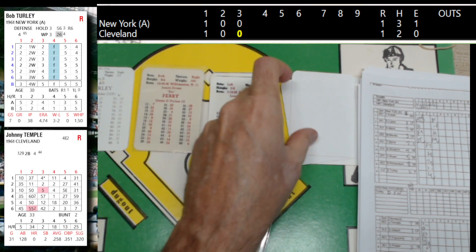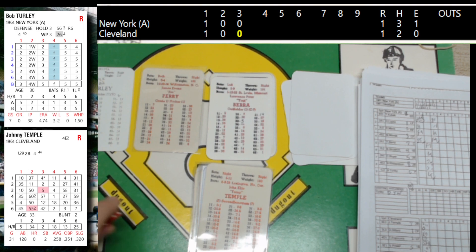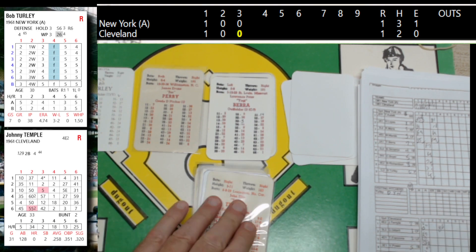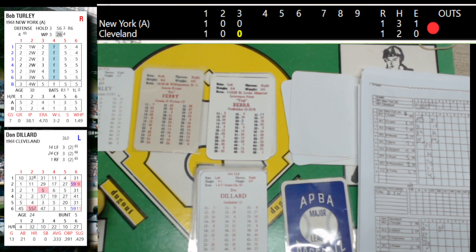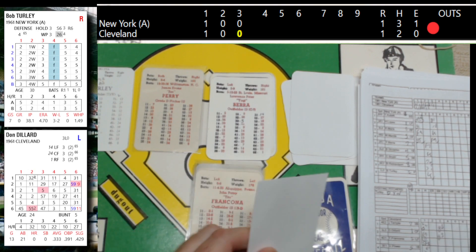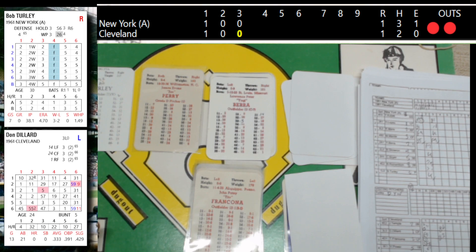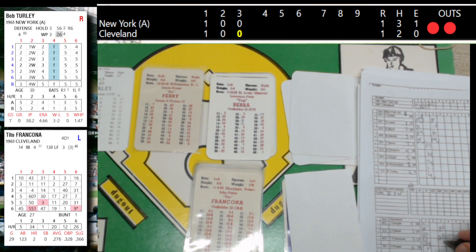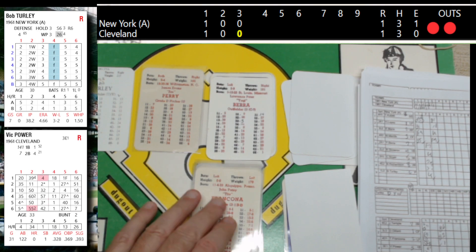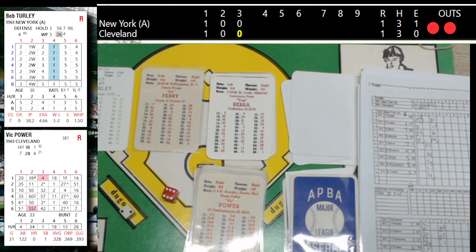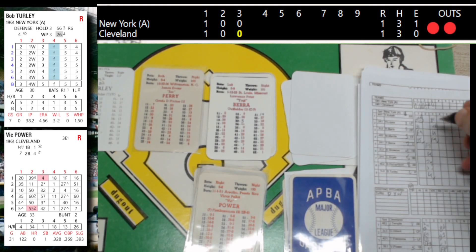Bottom of the third. Temple bounces to the shortstop, Kubik picks it up and throws him out, first out. Dillard bounces out to first baseman Scourin, steps on the bag. Francona lines one to right for a base hit, a two-out single — that's his second hit. Vic Power — drive to center field, Mantle on the run tracks it down. No runs, one hit, one left.